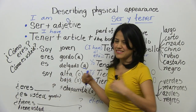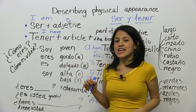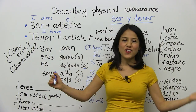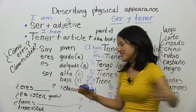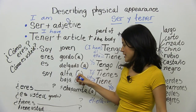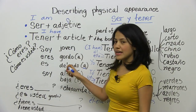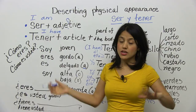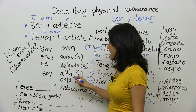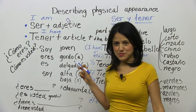Soy alta — I'm not tall, I'm short — soy baja. In Mexico we say soy chaparrita, o chaparrito, if it's a man or a woman. As you can see, they all change gender — it depends on whether you're talking about a female or a male, feminine or masculine noun. For feminine: delgada. For a man: delgado — with O, with A.